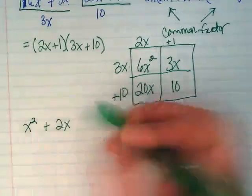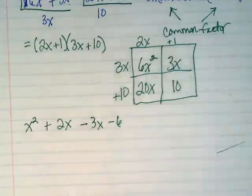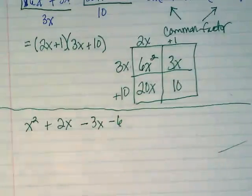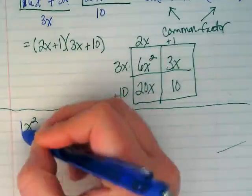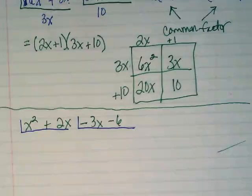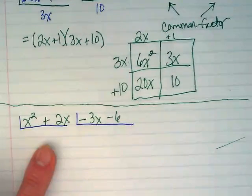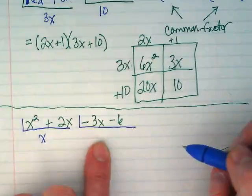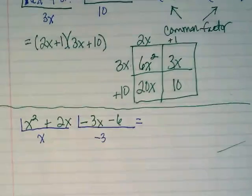X squared plus 2x minus 3x minus 6. Are we going to do opposite divide now? We're going to factor it by grouping. We're going to group this set and this set. What does my first group have as its greatest common factor? X. Just an x. What does my second one have? Negative 3.